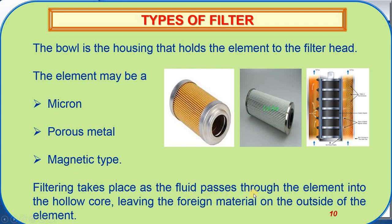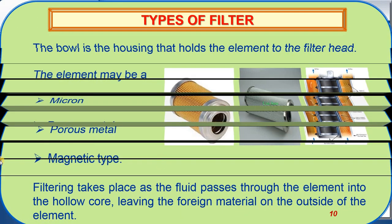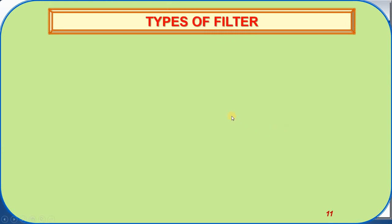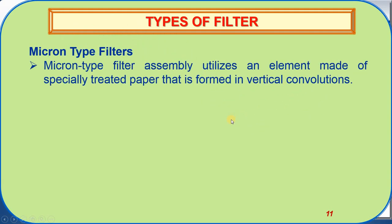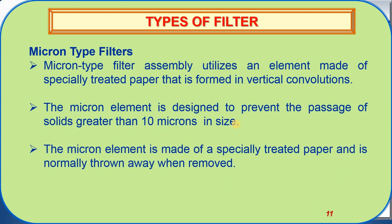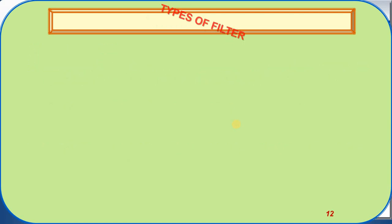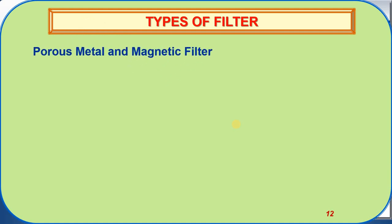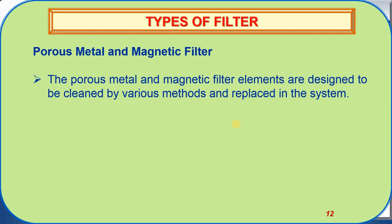Filtering takes place as the fluid passes through the element into the hollow core, leaving the foreign material on the outside of the element. Micron type filter assemblies utilize an element made of specially treated paper formed in vertical convolutions, designed to prevent passage of solids greater than 10 microns in size. The micron element is normally thrown away when removed. Porous metal and magnetic filter elements are designed to be cleaned by various methods and replaced in the system.